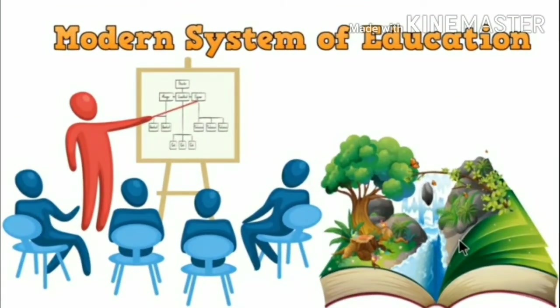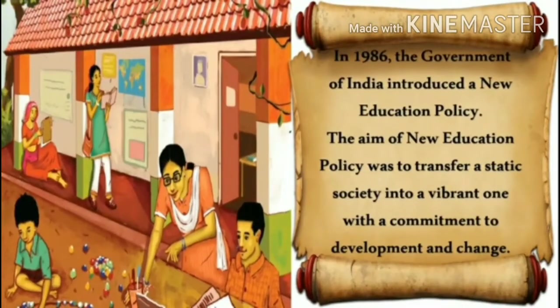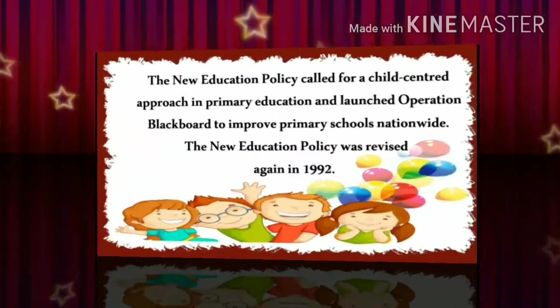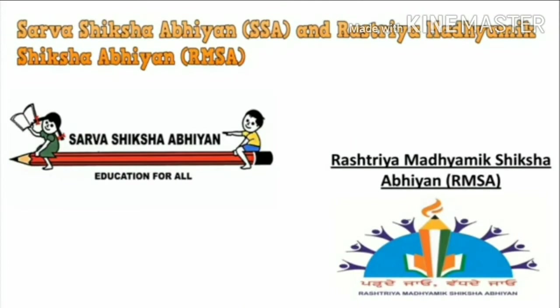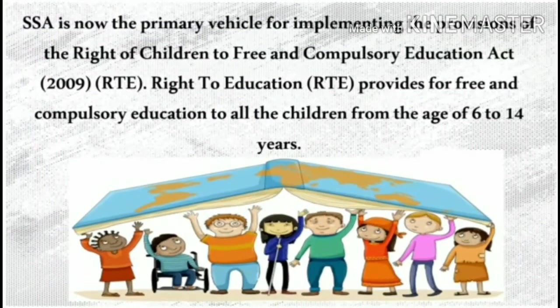Now let's see about the modern system of education. In 1986, the Government of India introduced a new education policy, which was revised again in 1992. Sarva Shiksha Abhiyan (SSA) is the primary vehicle for implementing the provisions of the Right of Children to Free and Compulsory Education Act 2009, i.e. RTE — Right to Education.